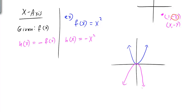Putting that negative in front causes the graph to open downward — in other words, it's reflected in the x-axis. Any point (x, y) on the original graph maps to (x, -y) on the reflection, because we're now on the opposite side of the x-axis.